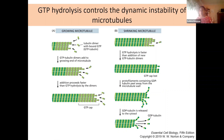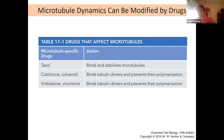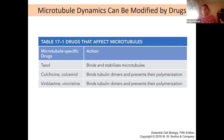Another class of drugs attacks the alpha-beta tubulin dimers and prevents them from ever forming the microtubule to begin with. So this causes a stall in prophase, or even earlier at that stage, where the cell cannot even start building a mitotic spindle and therefore cannot progress further into mitosis at all.